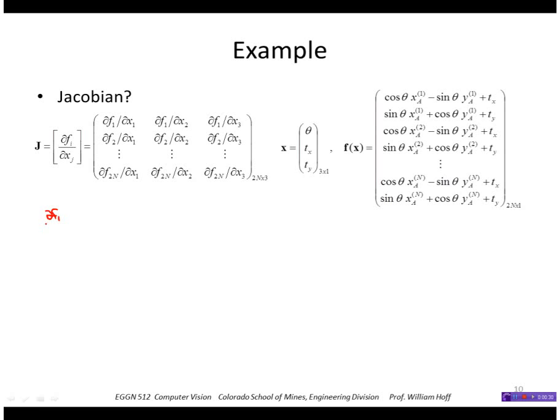This would be the derivative with respect to theta of that first row, which is cosine theta times xa1 minus sine theta times ya1 plus tx.